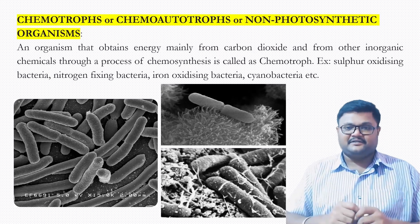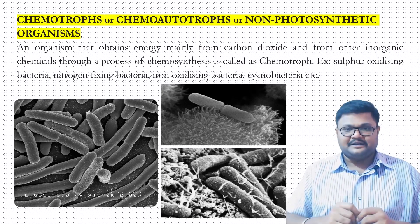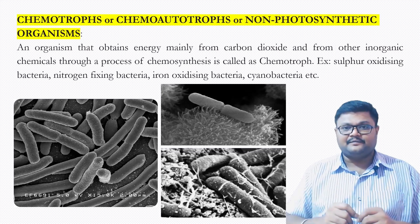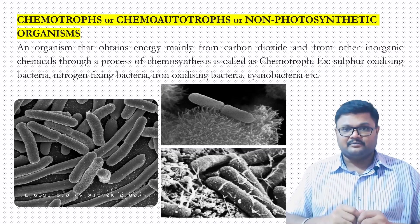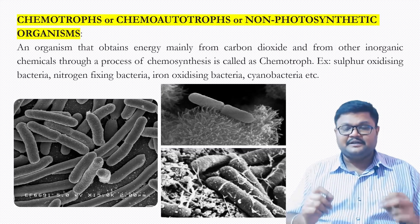Examples of chemoautotrophs include sulfur-oxidizing bacteria, nitrogen-fixing bacteria, iron-oxidizing bacteria, cyanobacteria, etc.